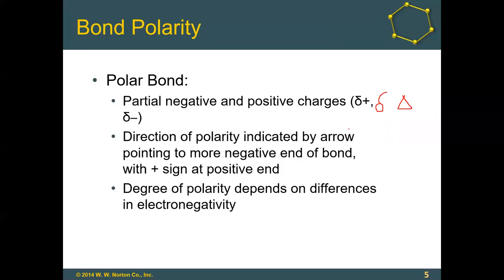We can also show the direction of bond polarity by drawing an arrow pointing toward the side the electrons move to — that end is more negative. We put a little crosshatch plus sign on the more positive end of the arrow. The size of this arrow, the degree of polarity, depends on the difference in electronegativity — a less polar bond gets a smaller arrow.